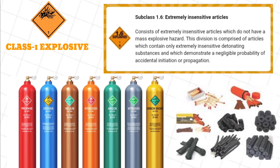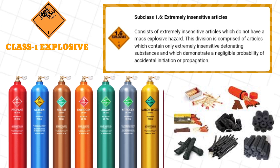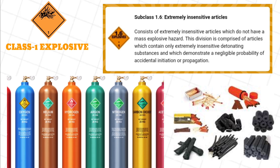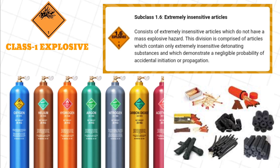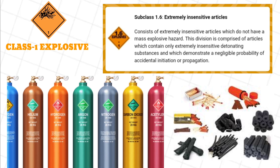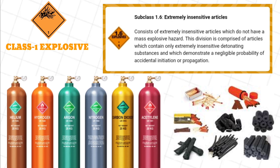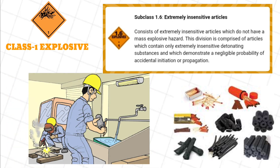Subclass 1.6, Extremely insensitive articles, consists of extremely insensitive articles which do not have a mass explosive hazard. This division is comprised of articles which contain only extremely insensitive detonating substances and which demonstrate a negligible probability of accidental initiation or propagation.